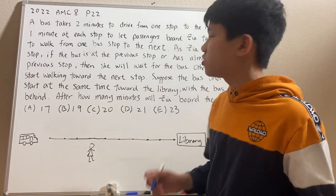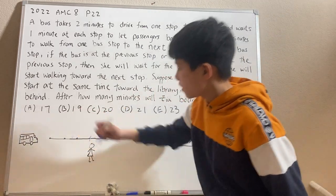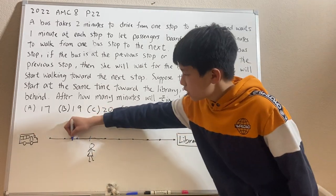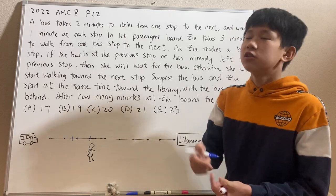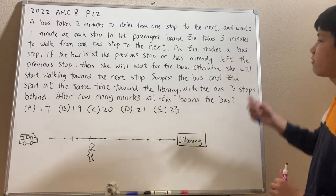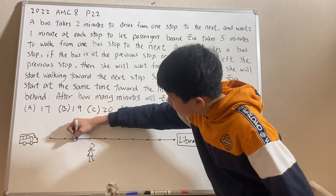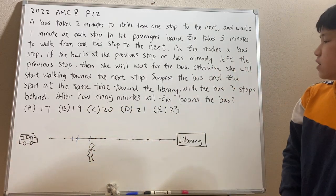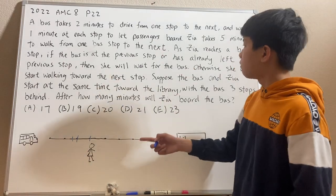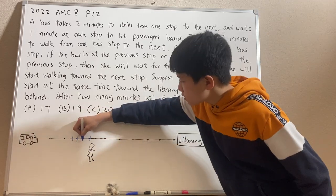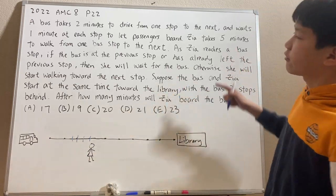Let's do a couple of examples to show what I mean. Say Zia is right here and the bus is right here — does it satisfy the requirement? No, because the bus is not at the previous stop, nor has it left the previous stop. So Zia will continue to the next stop. Now, if the bus is right here, it is at the previous stop, so Zia will actually wait. Similarly, if the bus is right here, Zia will wait because the bus has left the previous stop.